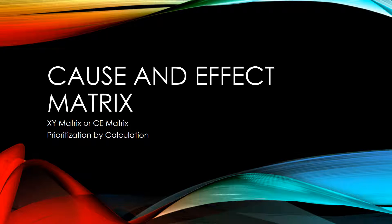Hello and thank you for checking out the Six Sigma Toolbox. Today we're going to take probably under 10 minutes to talk about a cause and effect matrix. It's also called an XY matrix if you speak mathematician, or some folks call it a CE matrix, just short for cause and effect. All means the same thing. It's really a tool for prioritizing and assigning some numeric value to various inputs. So we'll jump right in and get started.